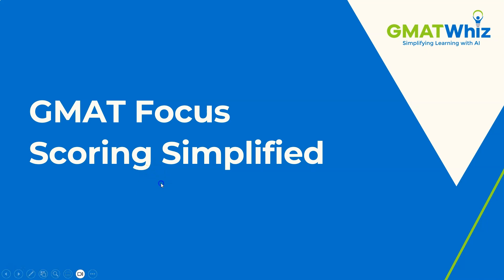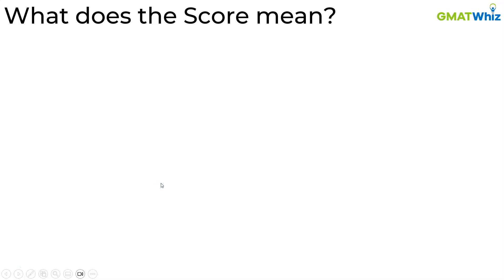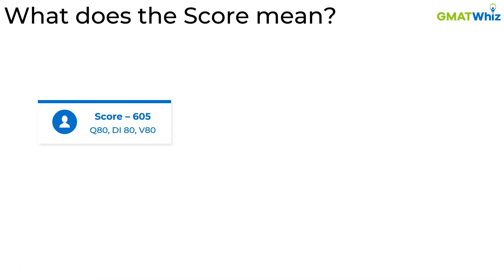Let's say you took the GMAT Focus and you scored 80 in exactly all three areas — quant, DI, and verbal — and your overall score is 605. You're wondering: what does this 80 really mean? Have I gotten 80% of questions correct? Is it 80 out of 100 in terms of score? Is it out of 90? Is it the percentile? Sadly, it is none of them, and that's where the scoring becomes complex.